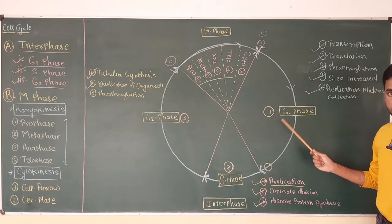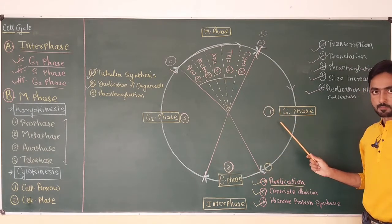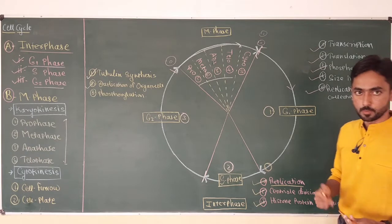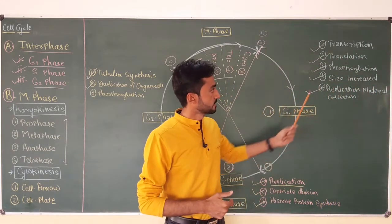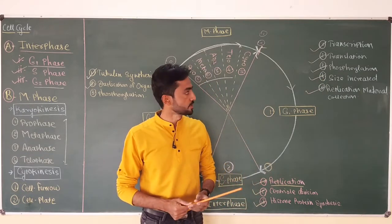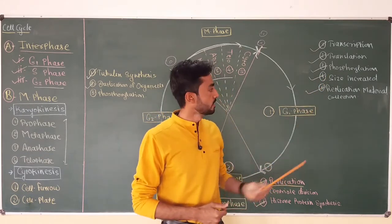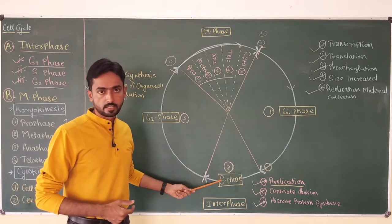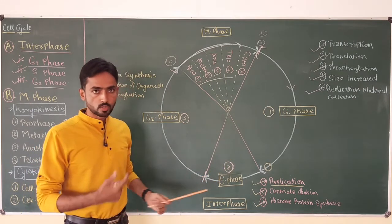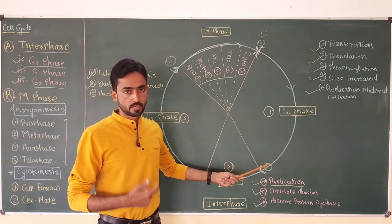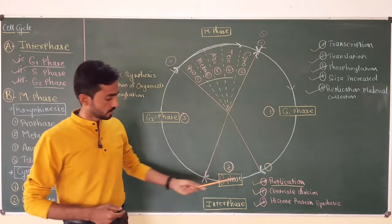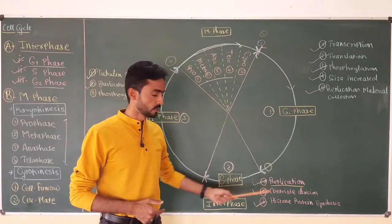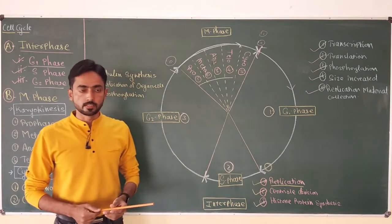In G1 phase, also called GAP1 or post-mitotic pre-synthesis phase, the cell performs functions like transcription or RNA synthesis, translation or protein synthesis, and produces large amounts of ATP by oxidative phosphorylation. The cell size increases and the cell collects requirements for replication, preparing itself for the S phase. When the cell enters S phase, actual DNA replication occurs. Centriole division also occurs in S phase in animal cells, since plant cells do not have centrioles.